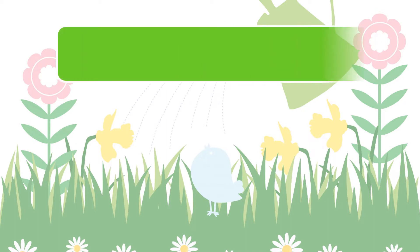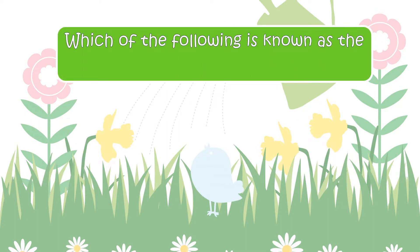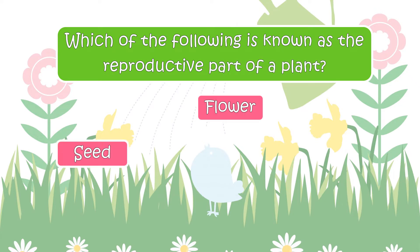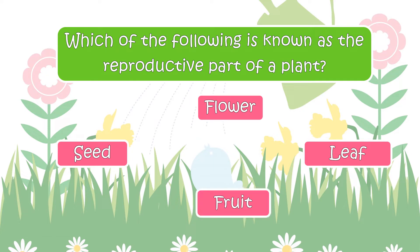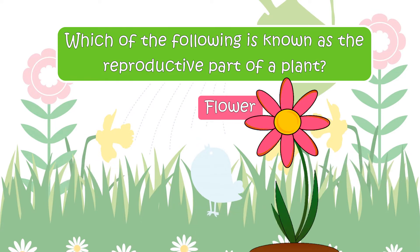Here is the first question. Which of the following is known as the reproductive part of a plant? Your options are Seed, Flower, Leaf, or Fruit. The right answer is Flower.